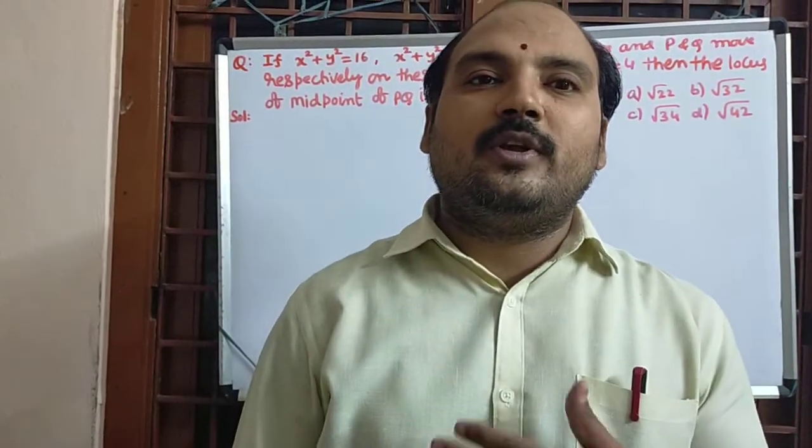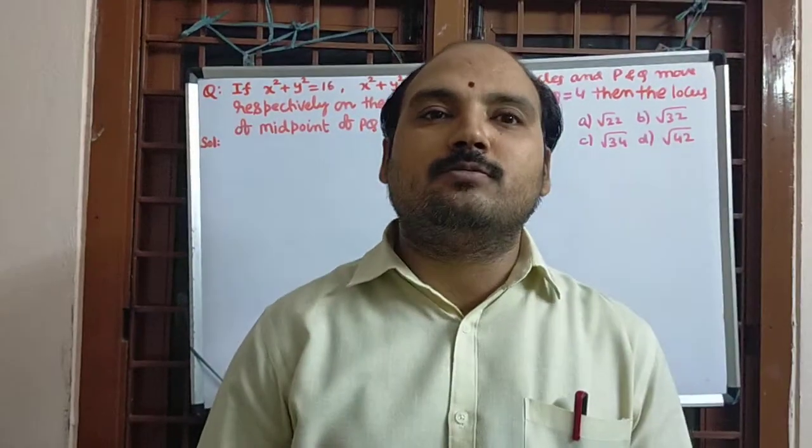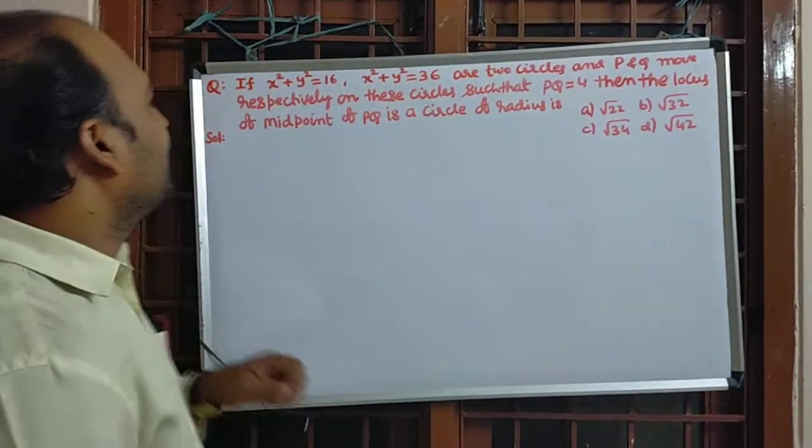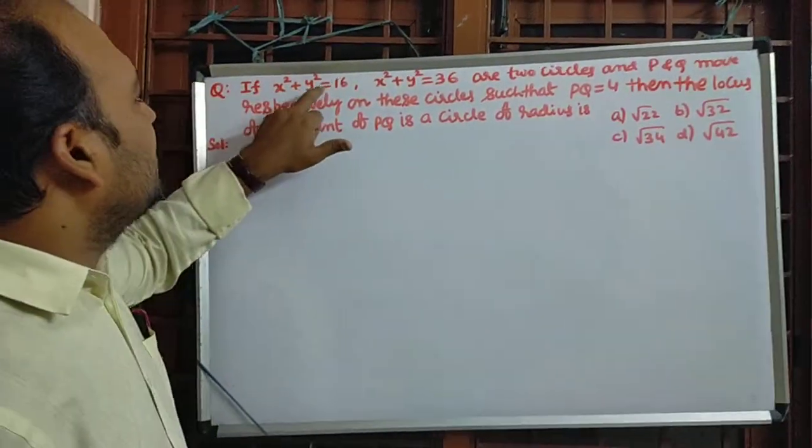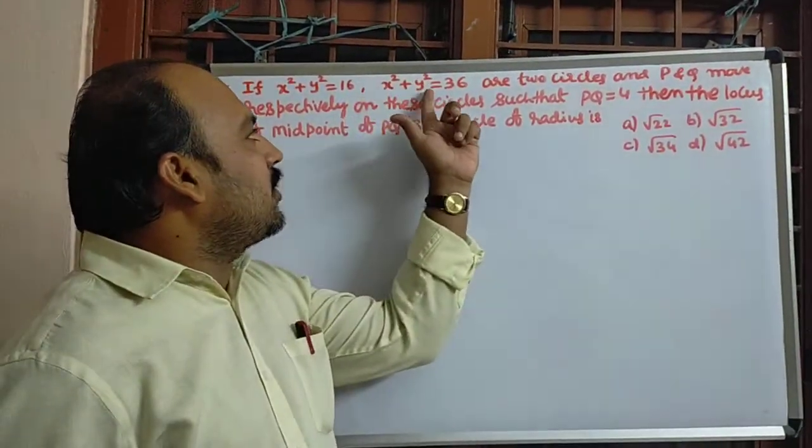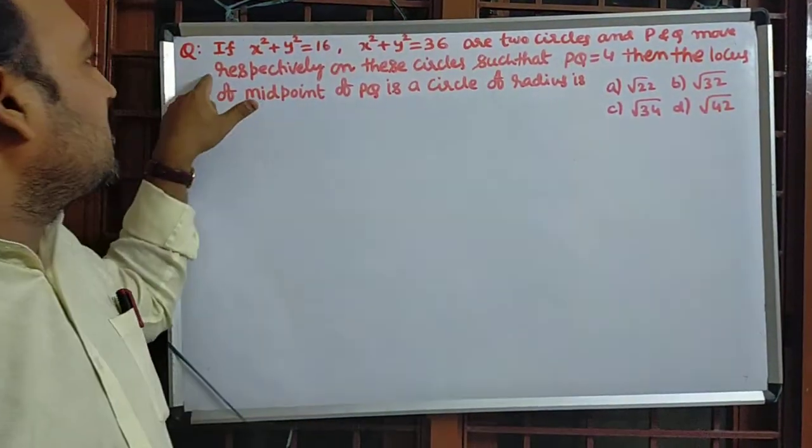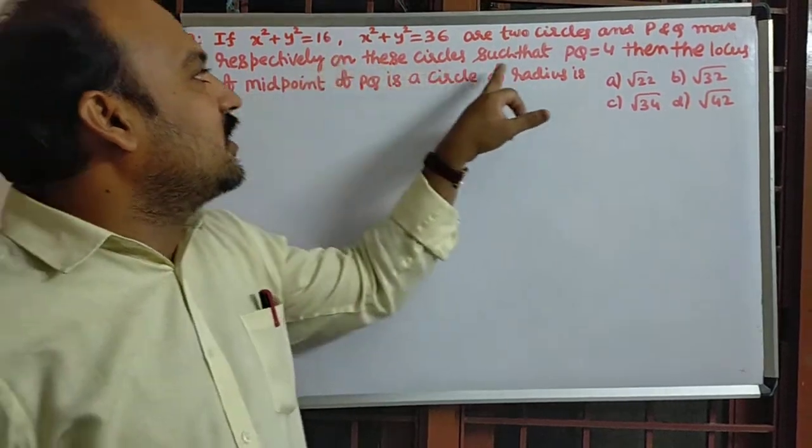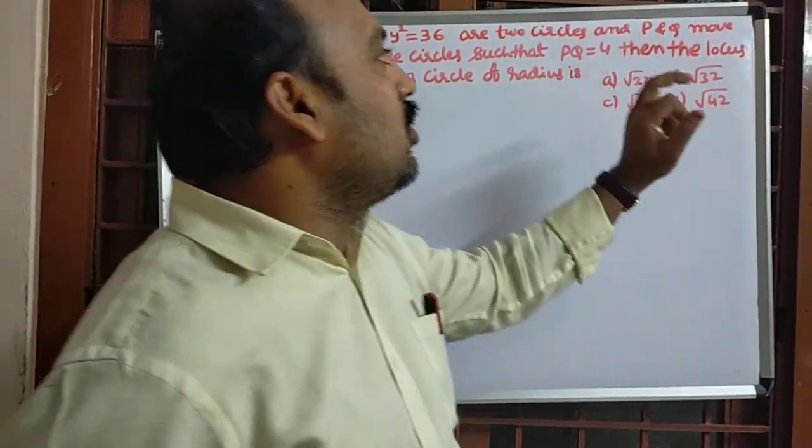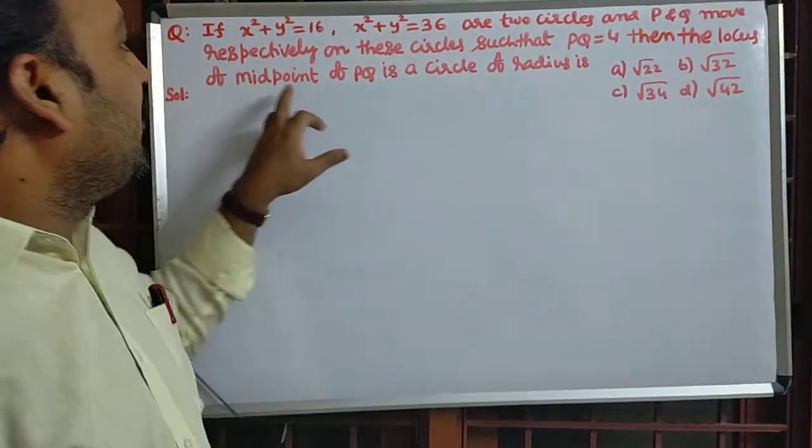Hi students, welcome to my channel. In this video, I am going to discuss a circle problem. See that if x² + y² = 16 and x² + y² = 36 are two circles, and P and Q move respectively on these circles such that PQ is equal to 4, then the locus of midpoint of PQ is a circle of radius.